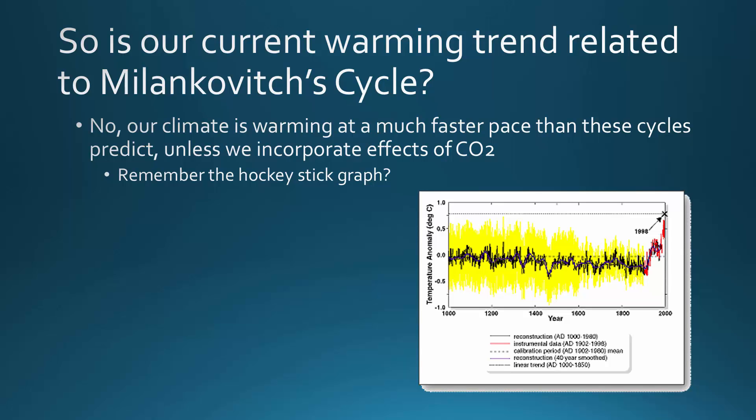That leads us to the final question: is our current warming trend — the one seen in the hockey stick graph — related to Milankovic's cycles? Is this just a natural cycle? The resounding answer from the scientific community is no. The Milankovic cycles do not predict the warming we're seeing. The warming is happening at a much faster pace than any of these natural cycles would predict — unless we include the effects of rising CO2 due to burning of fossil fuels, which takes CO2 stored underground over millions of years and pumps it into the atmosphere at a very quick pace, offsetting the CO2 balance in our atmosphere.